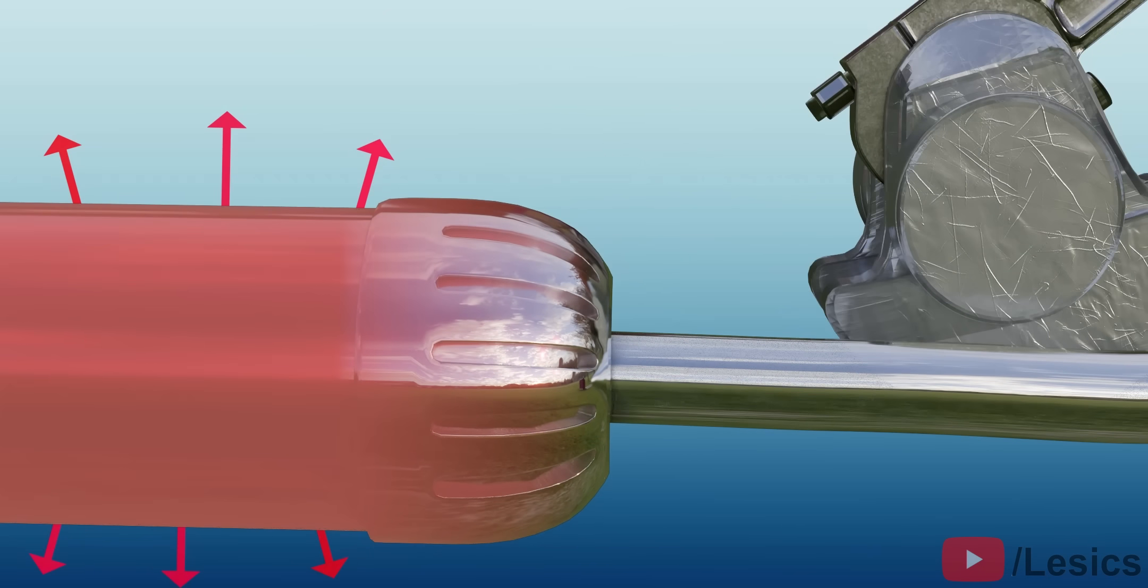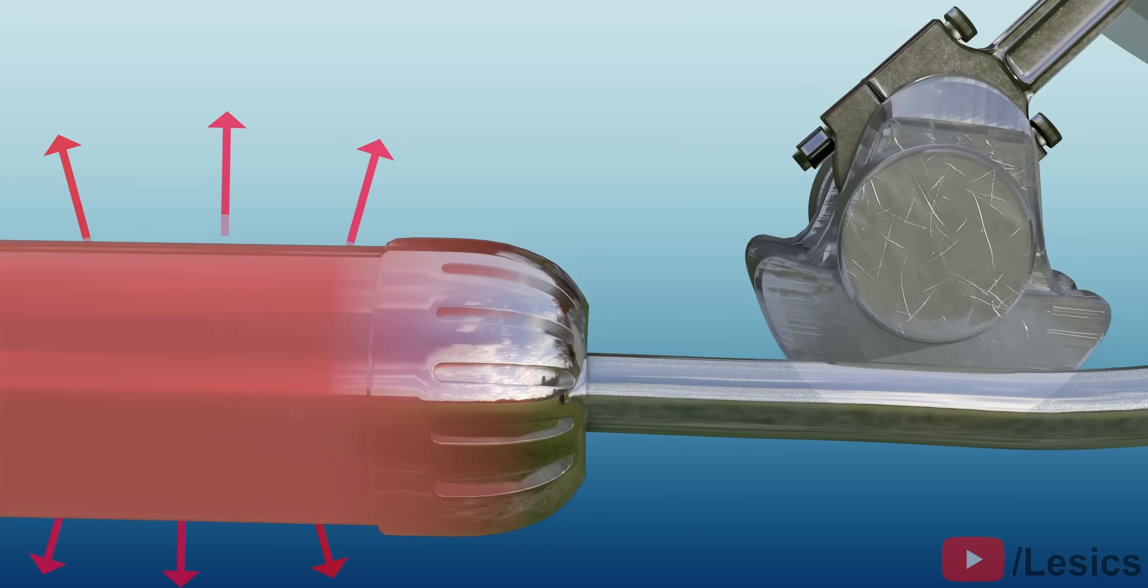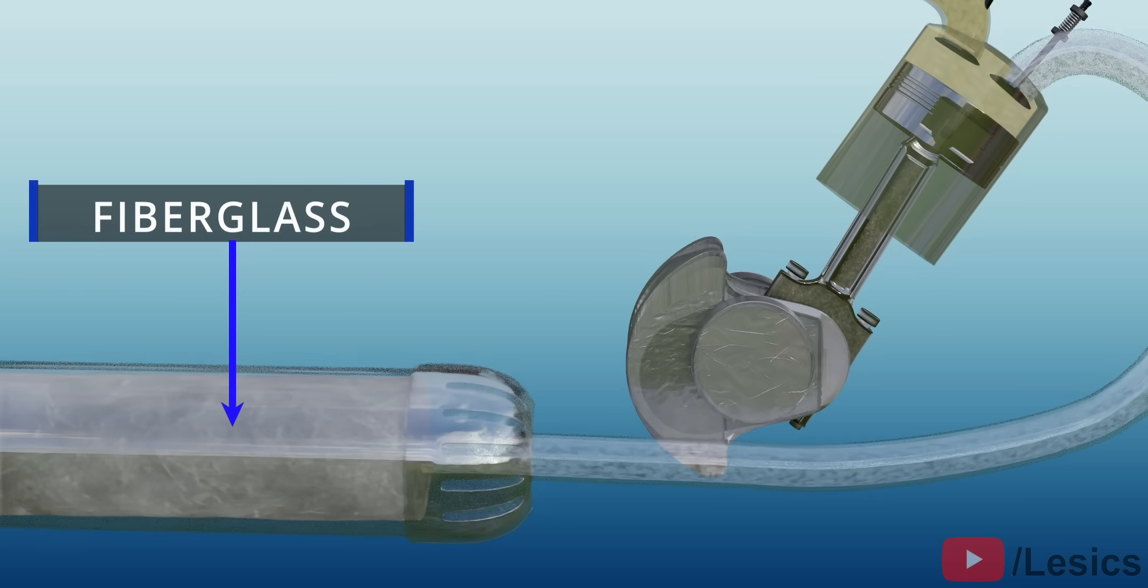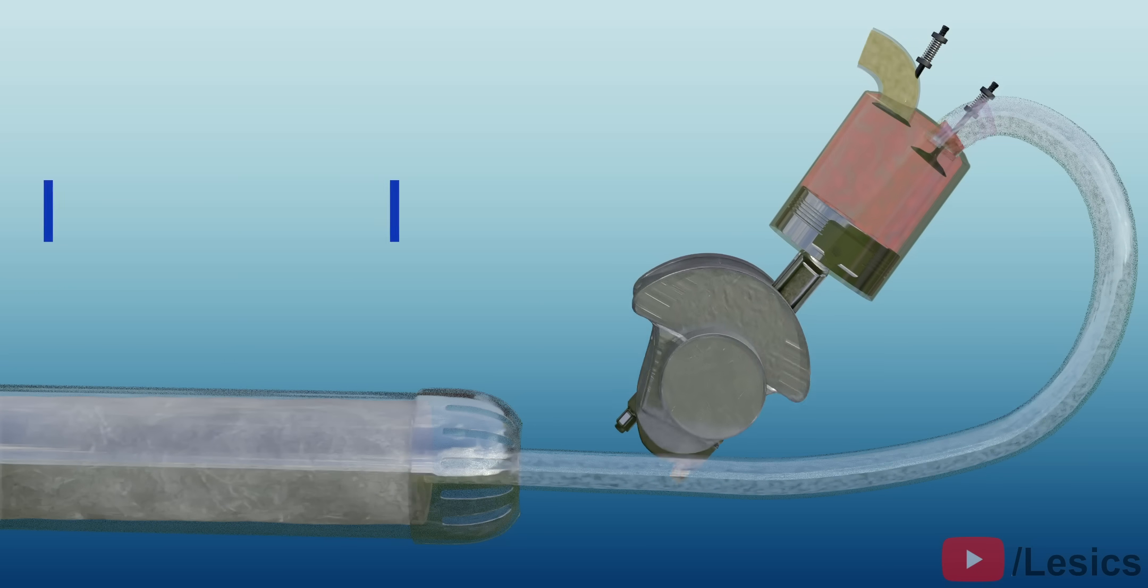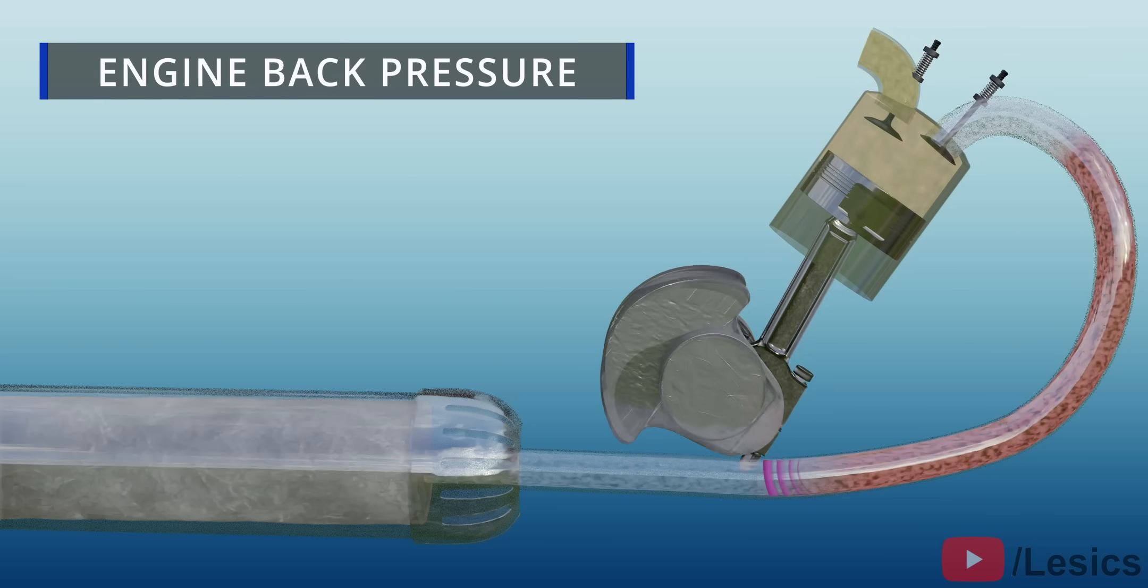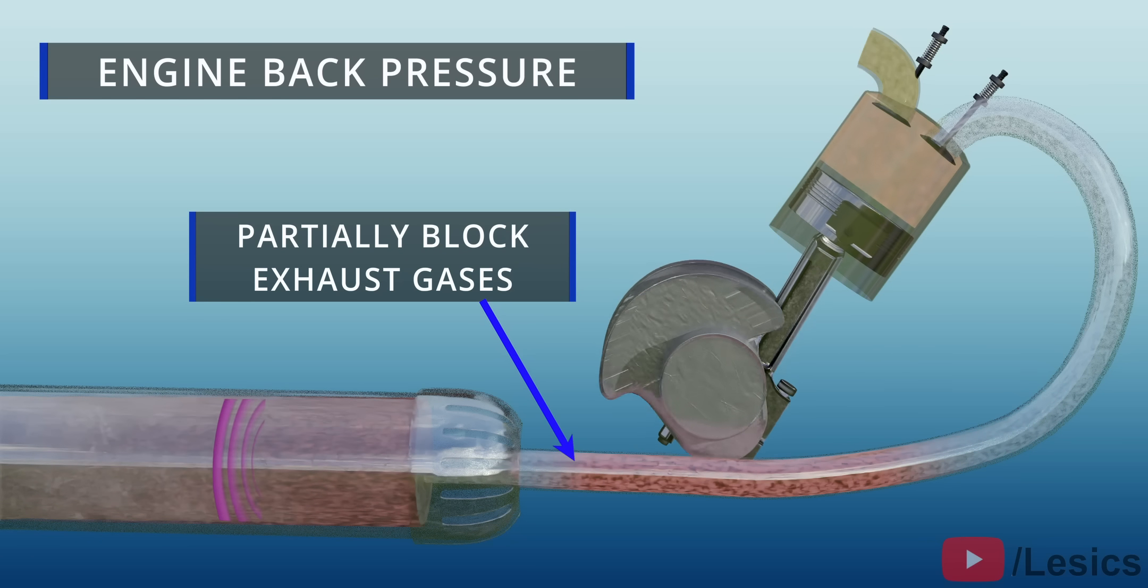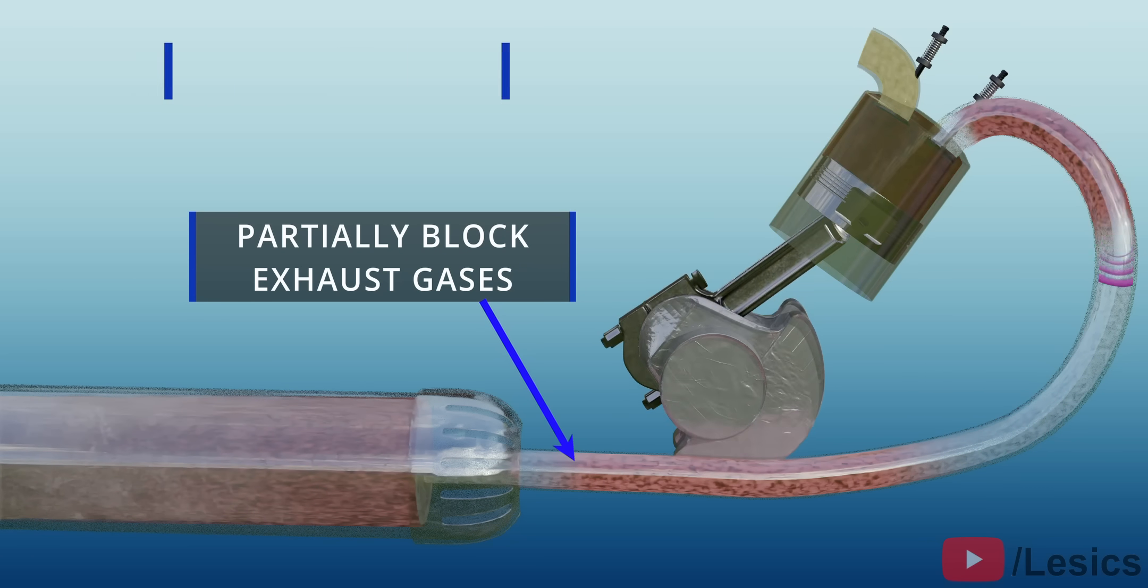However, this fiberglass is not used directly as depicted. Do you know why? The reason is back pressure on the engine. These dense fibers still partially block the exhaust gases, reducing the engine efficiency.